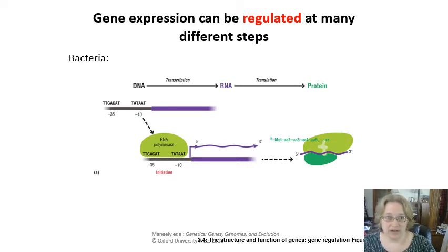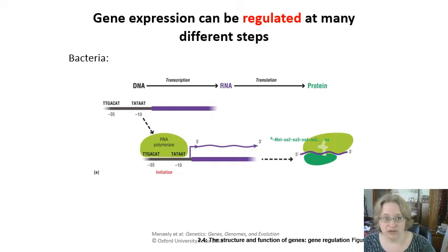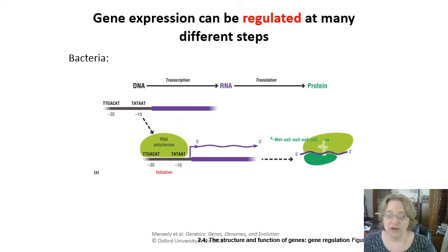In prokaryotes, it's very simple. It basically comes down to: does transcription start? If it does, that gene is going to get transcribed. The ribosomes will latch onto that emerging strand of mRNA and start translating it as it's being transcribed.